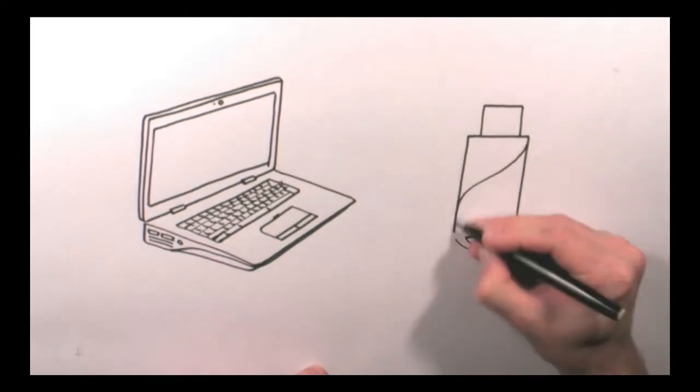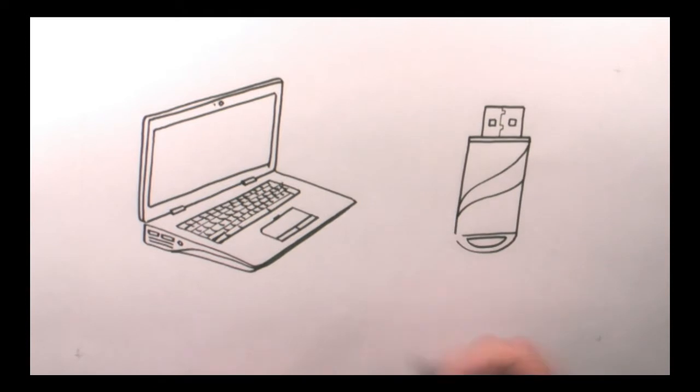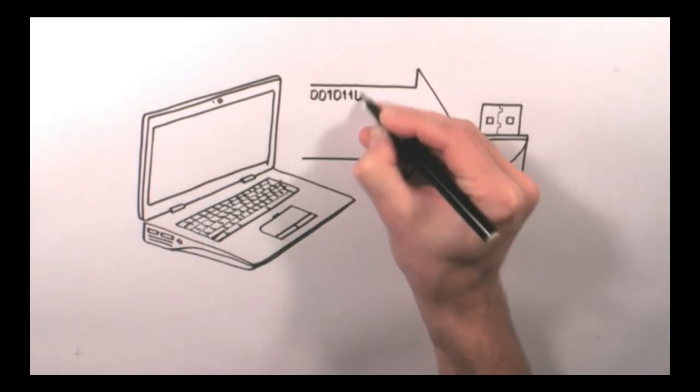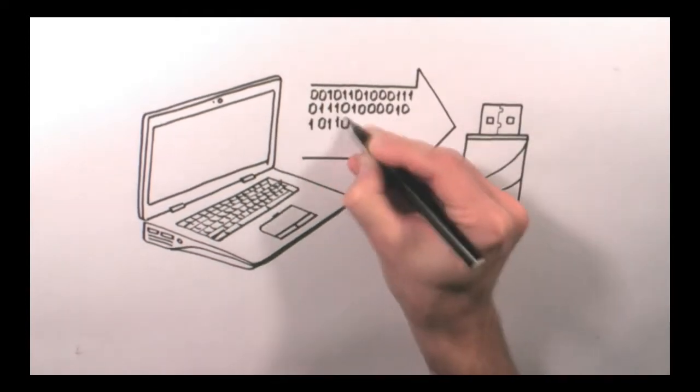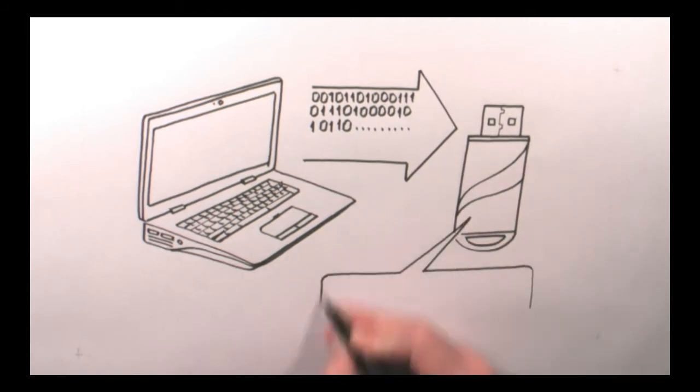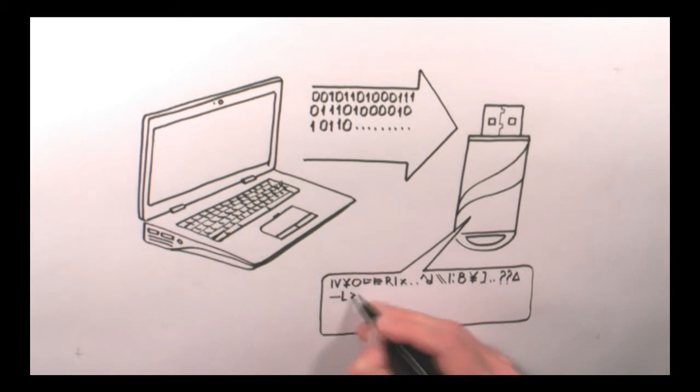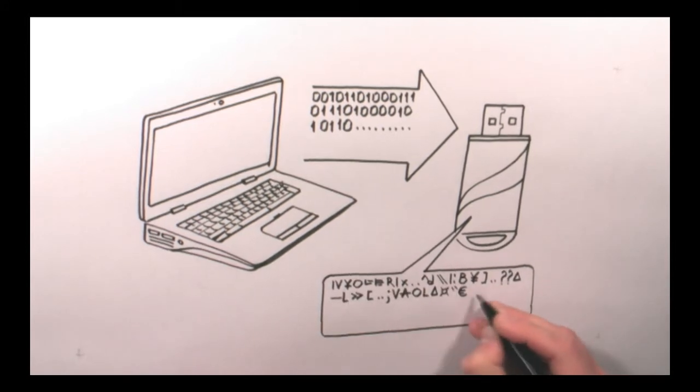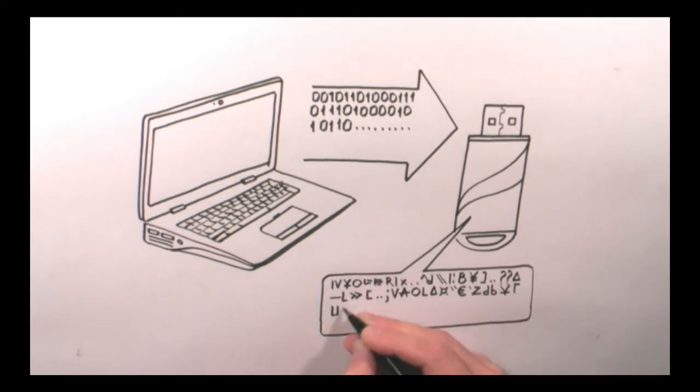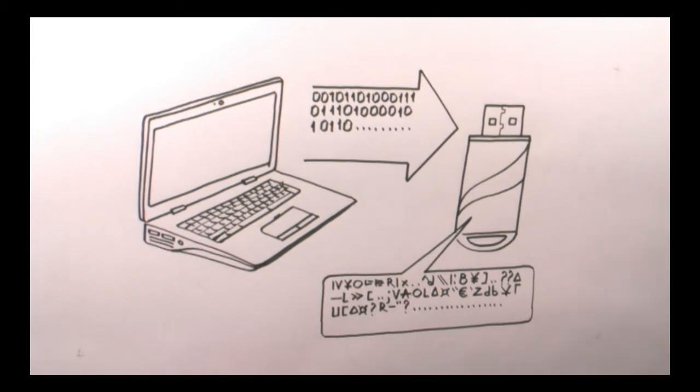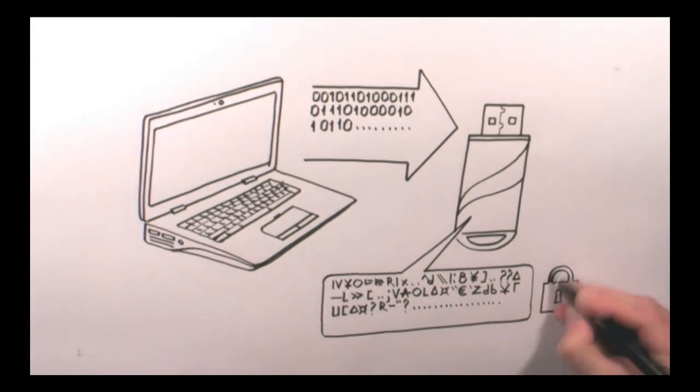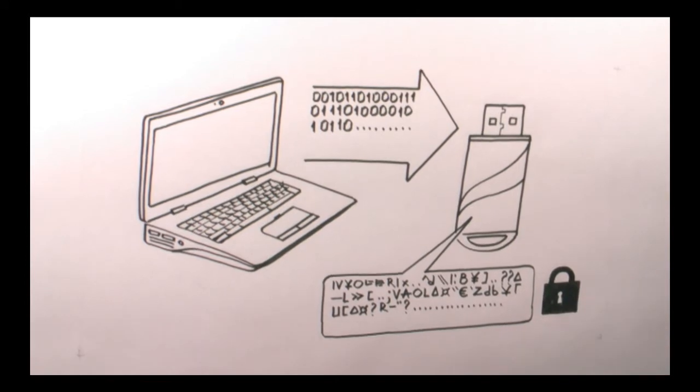They did some investigating and found that there are such things as hardware encrypted flash drives. This means that when the data is saved to a flash drive, the hardware within the flash drive automatically encrypts the data. This means that if a flash drive were lost, nobody could access the data because it would be scrambled, encrypted. The HIPAA and HITECH regulations state that if a drive is properly encrypted, then you have safe harbor and you won't be fined for that data breach. So that's great.